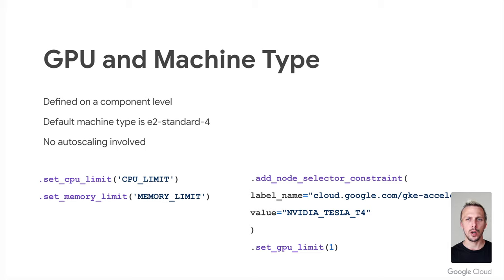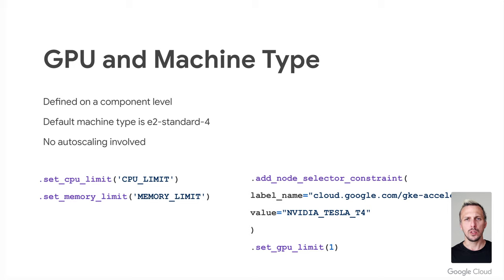The first thing we usually need in a production-like environment with machine learning is larger machines — more CPU, more memory, and GPUs, depending on your use case. With Vertex AI Pipelines, each component runs in its own job, meaning we can define the resources needed on a component level. For example, a high CPU machine for preprocessing and a GPU only for training. If we don't define a machine type, the default is the E2 Standard 4, equaling 4 vCPUs and 16 GB of memory. It's important to know there is no auto-scaling — the component can use exactly the resources defined, and not more.